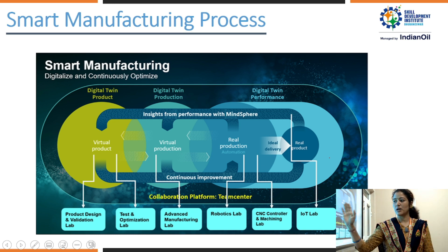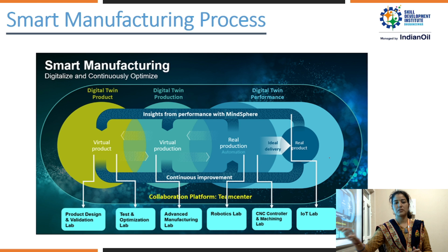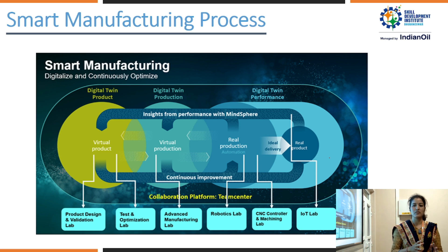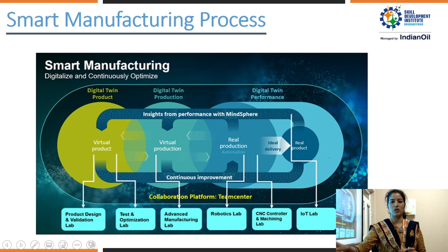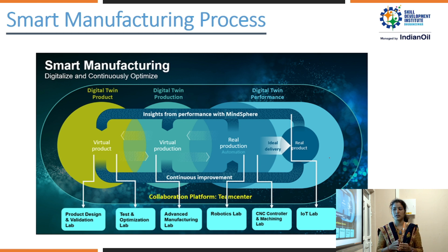In the smart manufacturing process, we have various functions and labs. First, the product is designed and validated in the product design and validation lab. Next, it goes through a test and optimization process in the test and optimization lab.